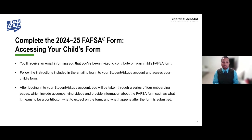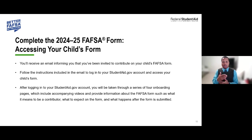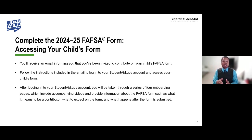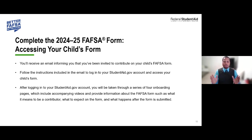When accessing the FAFSA form, you'll receive an email saying you've been invited to contribute and then follow the prompts. If you don't receive the email, go to StudentAid.gov, log in, and scroll down on your dashboard to see where you've been invited. Navigate through the process, provide consent and approval for your federal tax information to transfer, input additional financial information, and make sure you sign. Once you complete your part, if no additional contributor is needed, you'll be done.